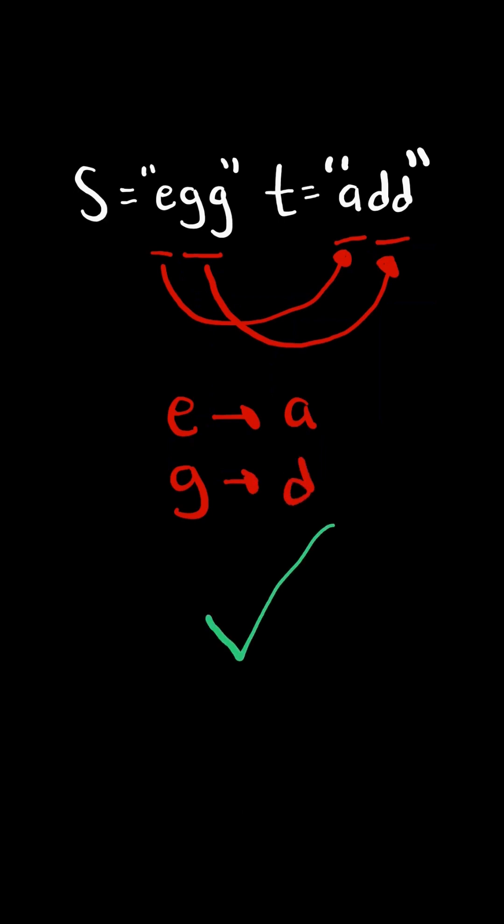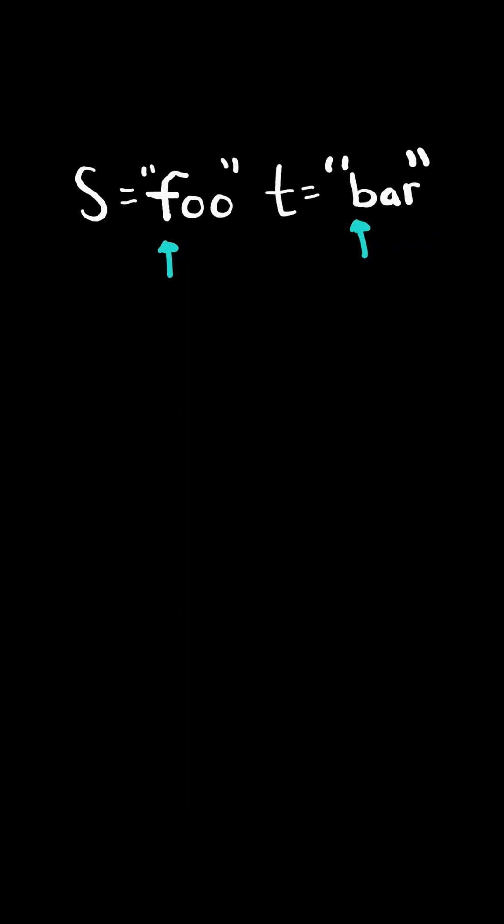Therefore, S and T are isomorphic. We can iterate through both strings and map the character in S to the character in T.